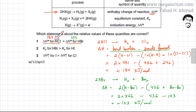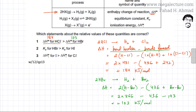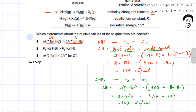Looking at this statement now: the enthalpy change for HCl is greater than the enthalpy change for HBr. This is a correct statement because we get 184 kJ/mol for HCl and 103 kJ/mol for HBr. So the first statement is perfectly correct.